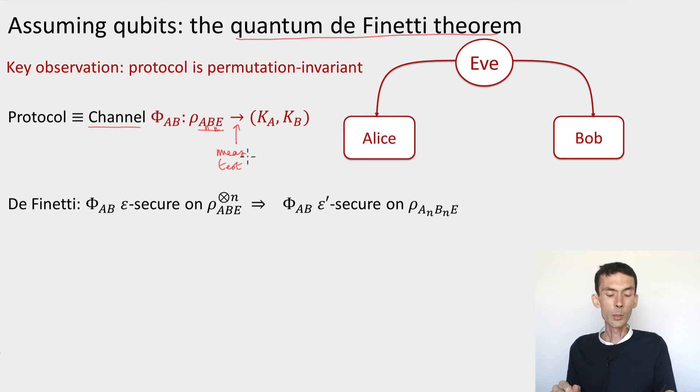So measurements that are performed by the Alice and Bob devices, we don't know what these measurements are. There are some tests such as the CHSH tests that are being performed. By the end of the day, what the protocol outputs is a pair of keys, KA for Alice and KB for Bob. And so now, the important property that this channel has for us is that it treats each of the subsystems, A^N and B^N, in a permutation-invariant manner. So the protocol is completely permutation-invariant. Each of the rounds is treated in the same way.